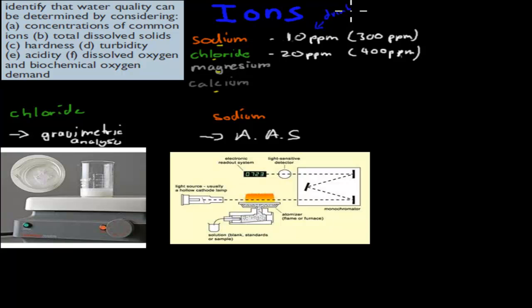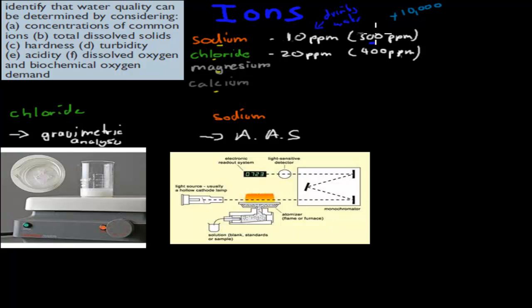That's for drinking water. In terms of the upper limits — where it's still okay to drink — we have about 300 parts per million for sodium and 400 parts per million for chloride. The ocean has more than 10,000 parts per million for each, which is obviously why drinking ocean salt water is not a good idea — it actually causes massive problems. If we have too much sodium or chloride in our drinking water, that will essentially cause death, so we need to keep them under control.